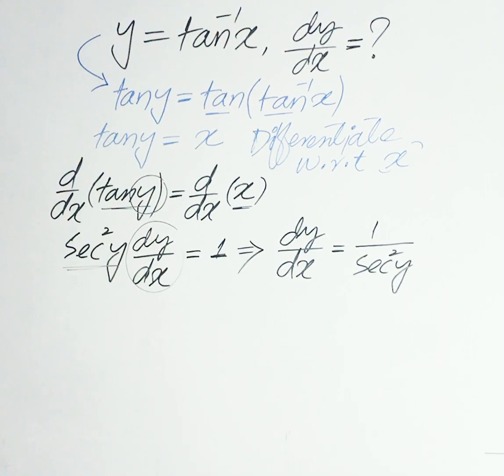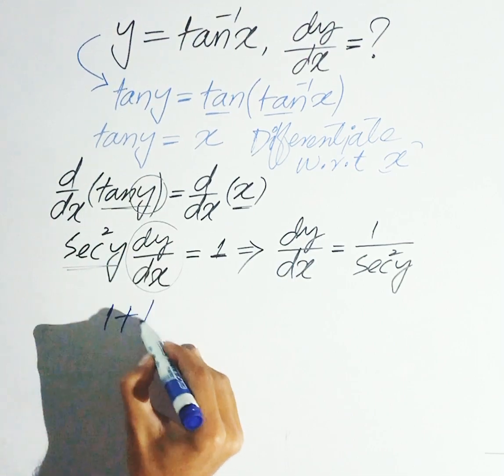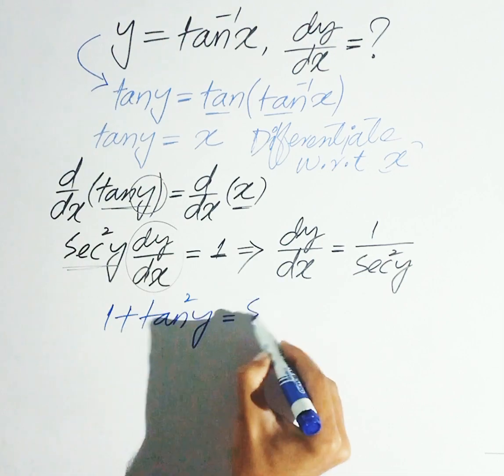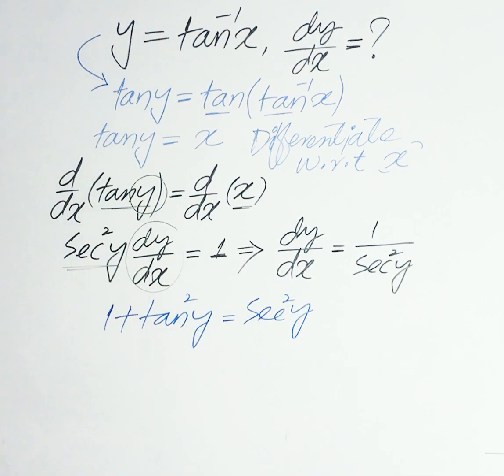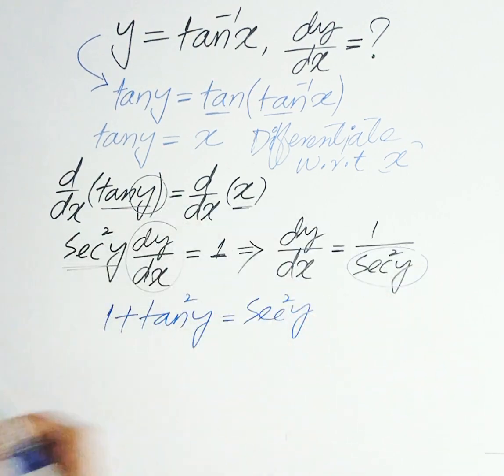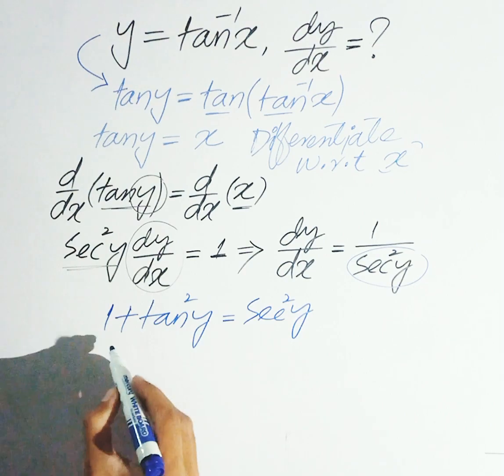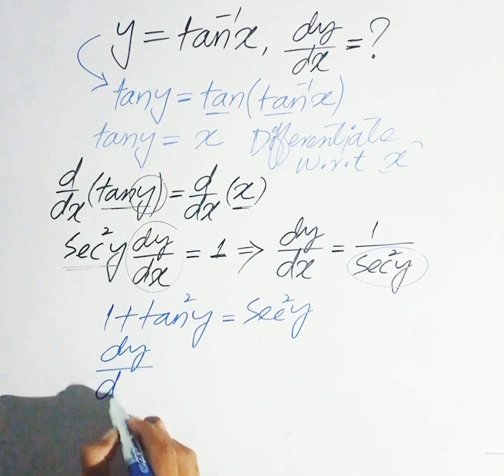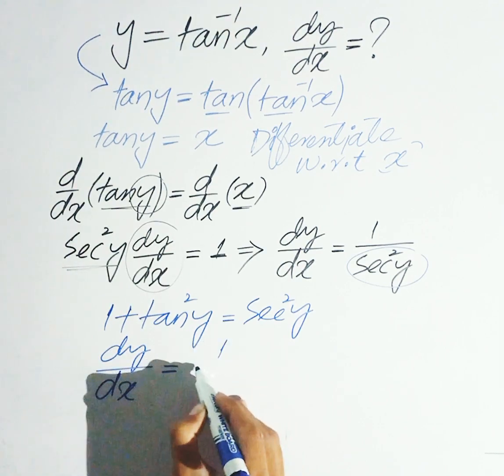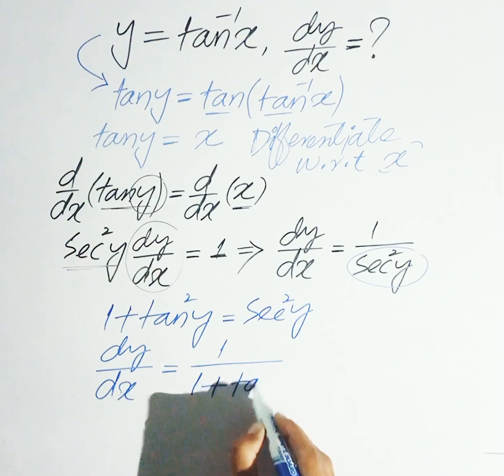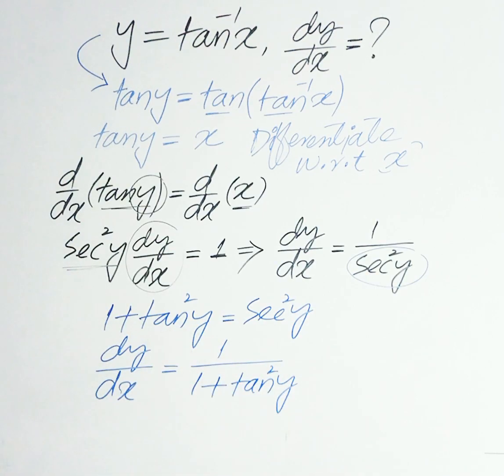Now we'll use the identity 1 plus tangent squared y is equal to secant squared y. So replace secant squared y with 1 plus tangent squared y. We get dy/dx is equal to 1 divided by 1 plus tangent squared y.